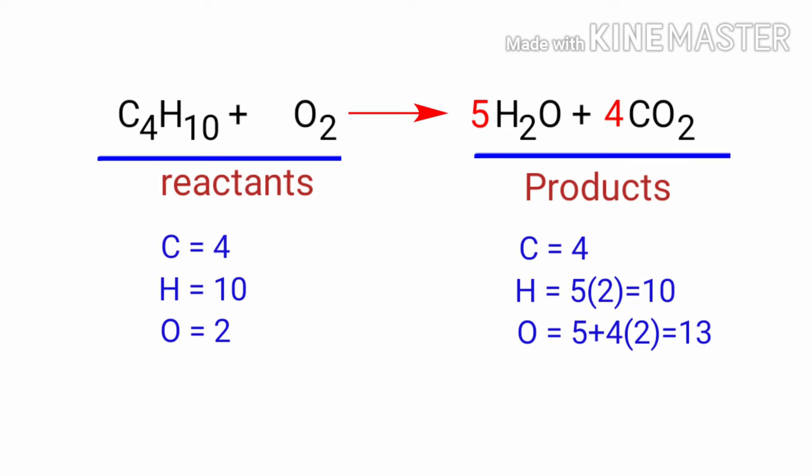Now we need to balance the oxygen atoms. To do this, we need to put a coefficient of 13 by 2 in front of O2. In this equation, 13 by 2 is a rational number. We don't use rational numbers for a molecule. So to get whole numbers, we need to multiply the equation by a coefficient of 2.